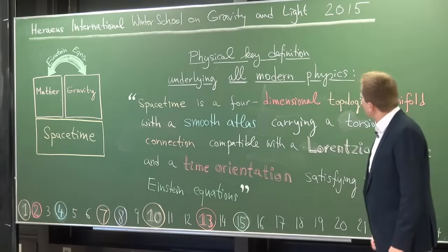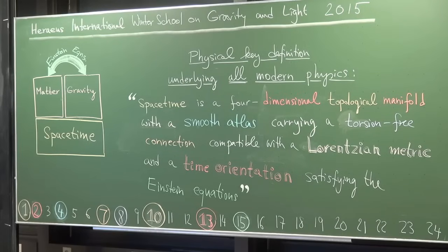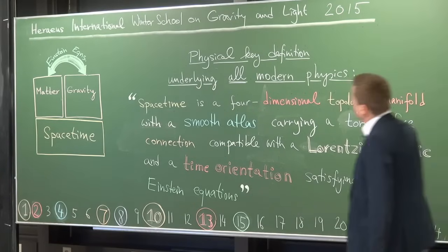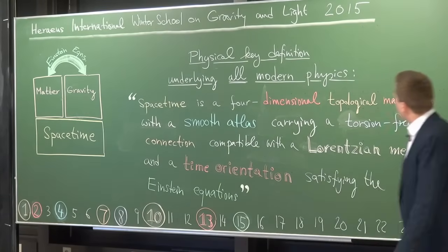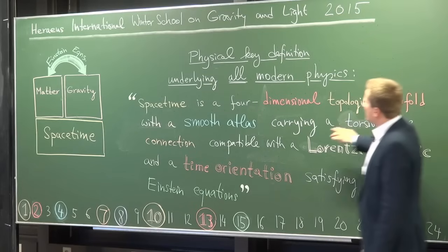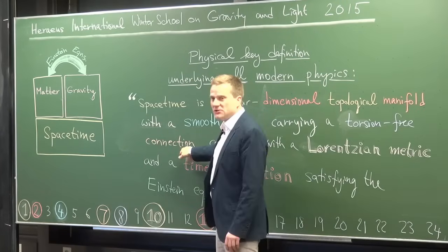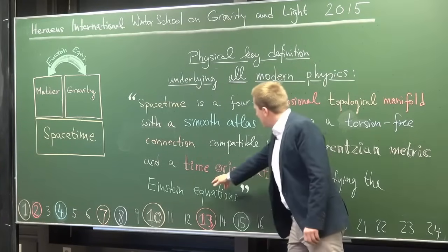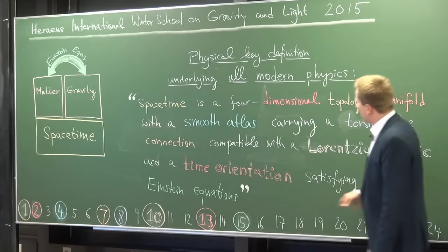A notion that is good enough is the one written down here — this is the physical key definition. Space-time is a four-dimensional manifold, a topological manifold that carries a smooth atlas, that carries a torsion-free connection compatible with the Lorentzian metric, and a time orientation — that satisfies the Einstein equations.